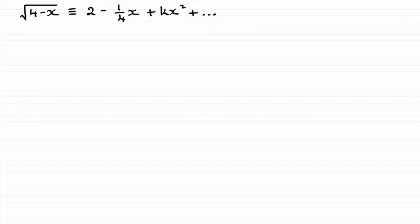Okay, for this question then, we're given the root of 4 minus x and told that if we were to use the binomial expansion, we would get this series in ascending powers of x. And we've got to find out this value of k. It's a rational constant.